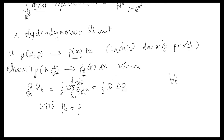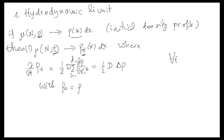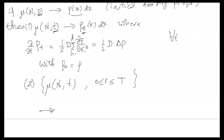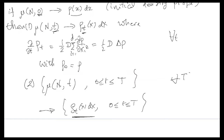That's the weakest statement: that for every t there is again a well-defined profile, and this profile is the solution of the equation. The second statement, which you usually get from that one with some extra technical things, is that the whole trajectory — a random distribution-valued trajectory — converges to the trajectory which concentrates on the solution of the equation, uniformly in t. From a technical point of view, it's not only saying that for every t you have convergence, but also uniformly in t you have convergence.